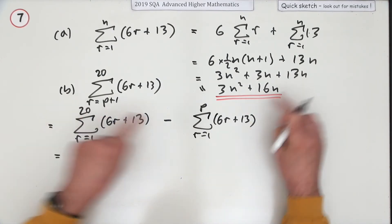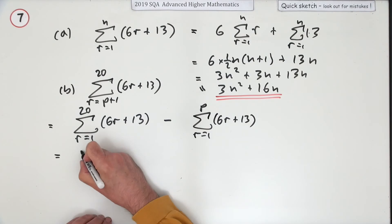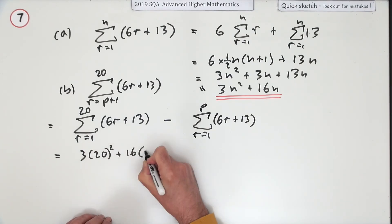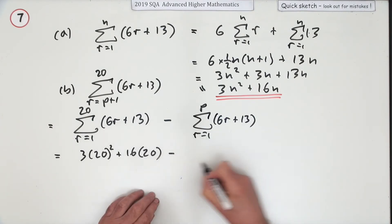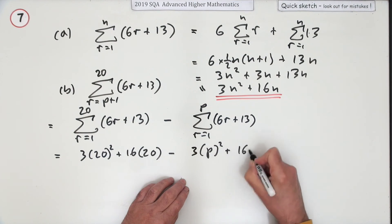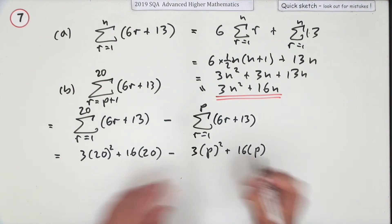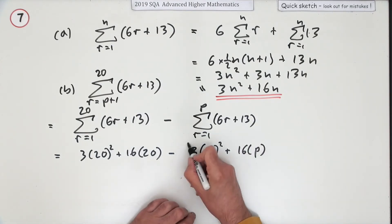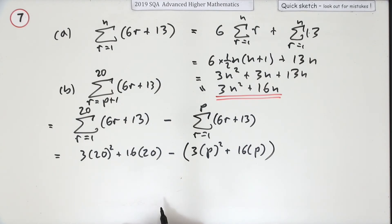Well that just means put twenty into this and put p into this. So it's going to be three times twenty squared plus sixteen lots of 20, minus three lots of p squared plus sixteen lots of p. Of course when I write that I should really have had another couple of brackets there because all of that's been subtracted.